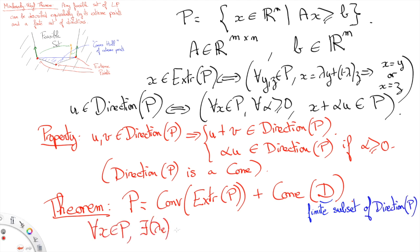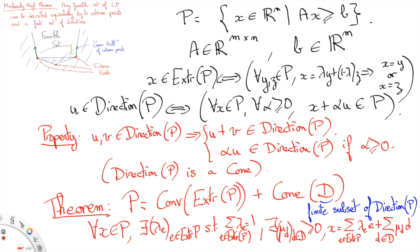there are non-negative extreme point weights, lambda_E for E an extreme point of P, that add up to 1, i.e. sum of the lambda_E is equal to 1, and non-negative direction weights, mu_D for D in D, such that we can write x equals to the sum over E of lambda_E times E, plus the sum over the D's of mu_D times D.